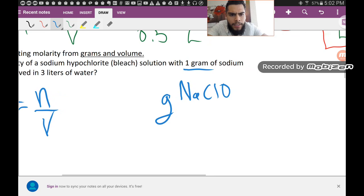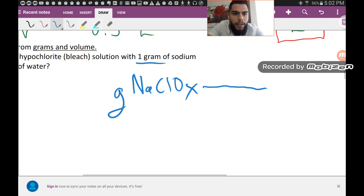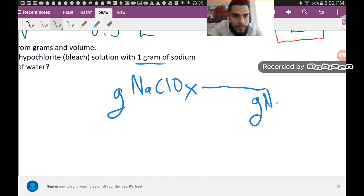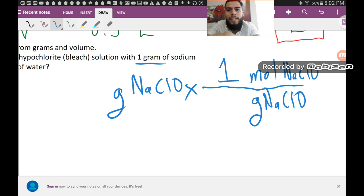And we don't want grams, we want moles, so we need to cancel out the grams. We're going to cancel out the grams by dividing by grams of the same substance, sodium hypochlorite. And we're going to moles of the same substance. So we say one mole of sodium hypochlorite is going to have how many grams? If you recall, we have to get the molar mass for sodium hypochlorite.